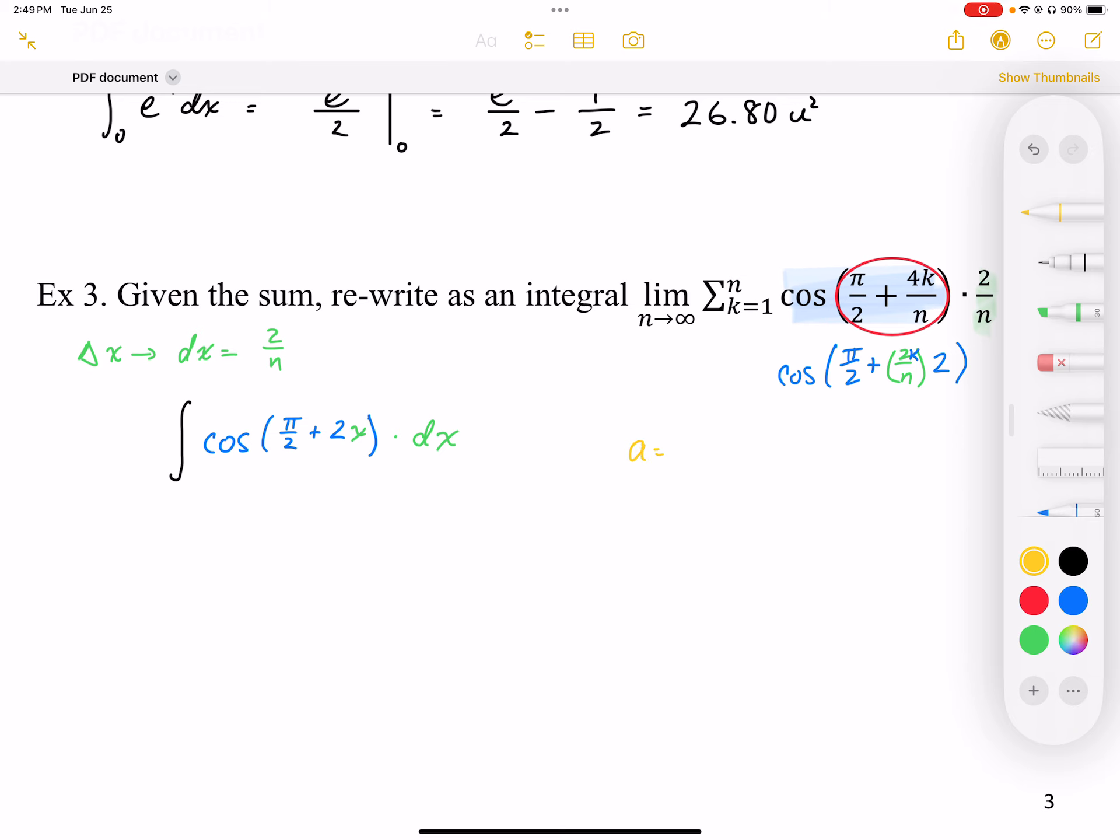So my start point a is going to be the limit as n goes to infinity when k equals 1. So it's going to be pi over 2 plus 4 over infinity—I'm just going to write that as n. So k equals 1, that's why I just get 4.